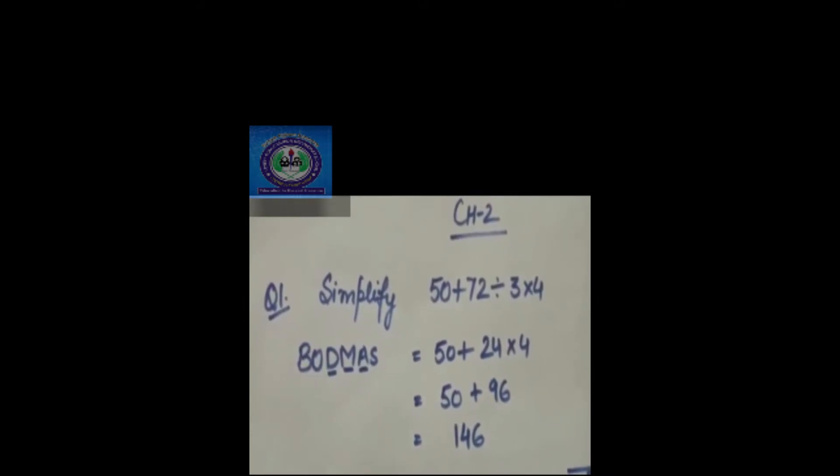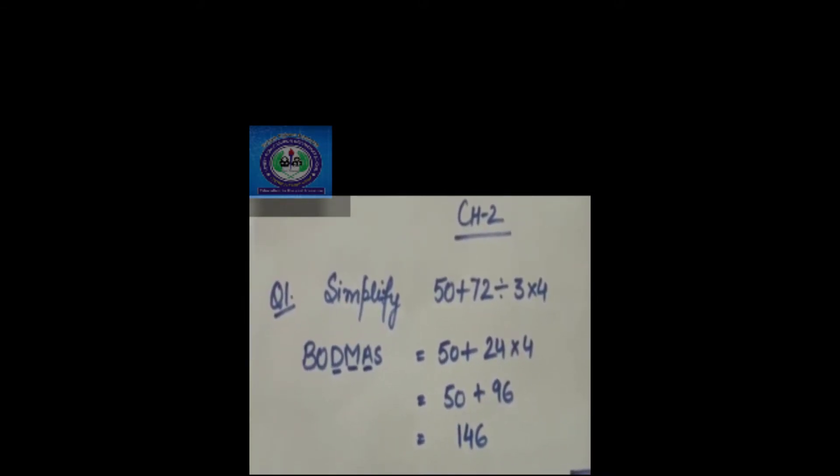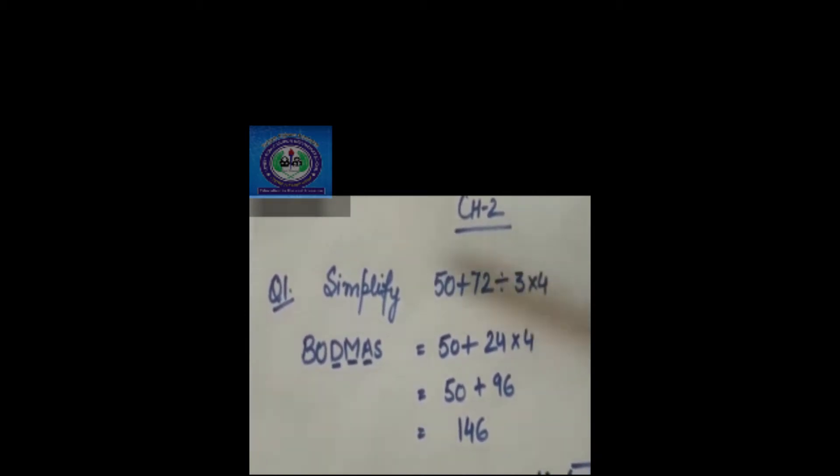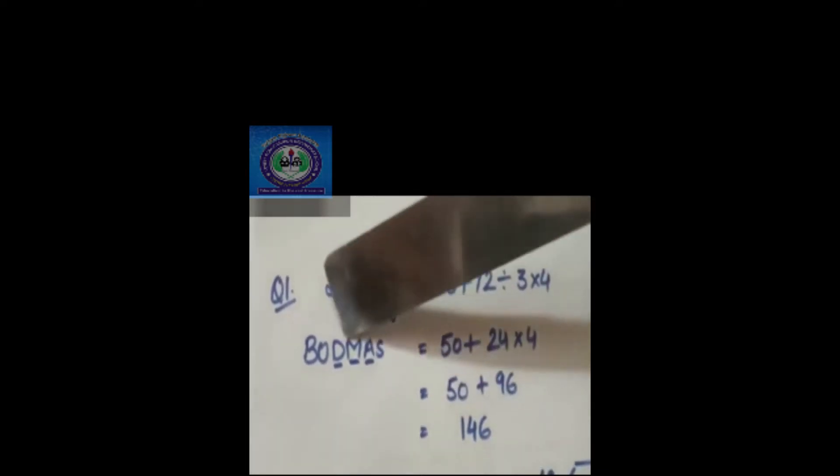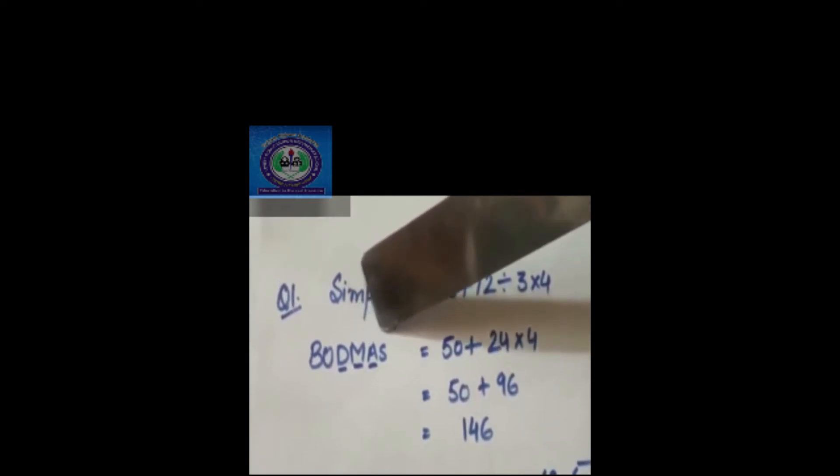Let's start with simplification questions. Whenever there is any question of simplification, you have to use BODMAS rule. So let's see the question: 50 plus 72 divided by 3 multiply 4. So here according to BODMAS rule, we will divide the number, then we will multiply and after that we will add the number.